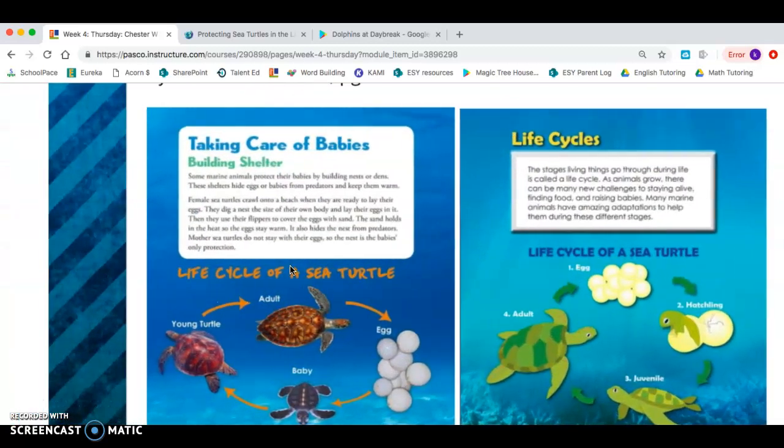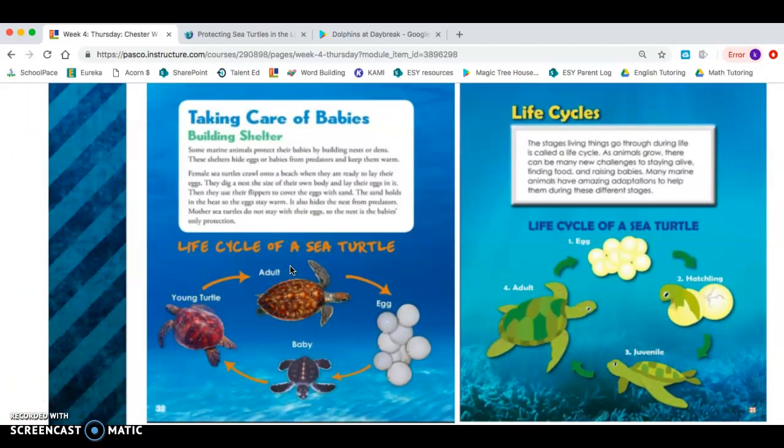First, let's look at taking care of babies. Building shelter. Some marine animals protect their babies by building nests or dens. These shelters hide eggs or babies from predators and keep them warm.